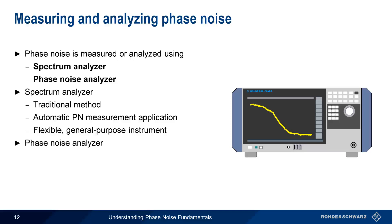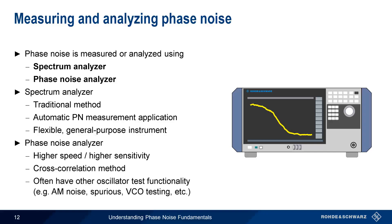A phase noise analyzer, as the name implies, is an instrument primarily designed to measure phase noise. They usually have higher speed and sensitivity than traditional spectrum analyzers, the increased sensitivity being mostly due to the cross-correlation method, something we'll cover a bit later in this presentation. In addition, many modern phase noise analyzers also have other functionality that's helpful when testing oscillators, such as the ability to measure amplitude noise and spurious emissions, or the ability to characterize voltage-controlled oscillators.